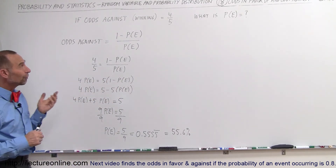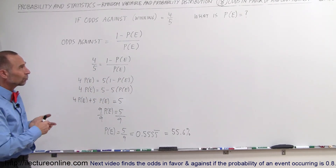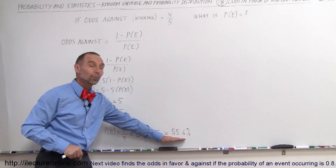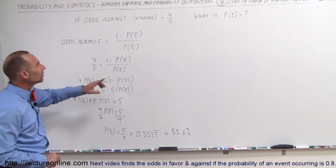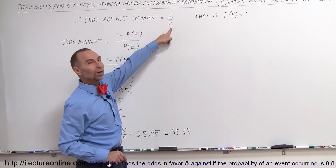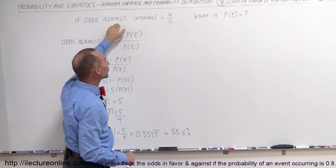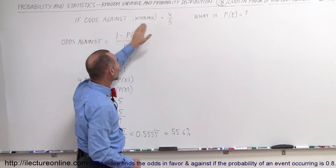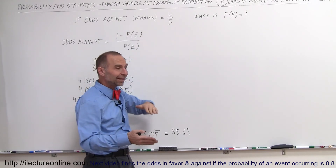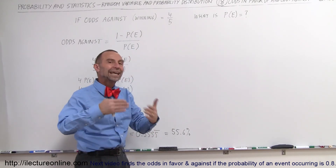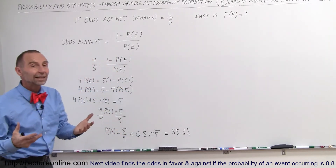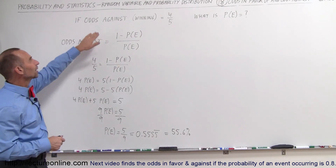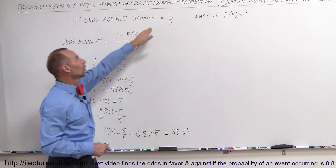So if the odds against winning are four-fifths, the probability that you will win — that the event will occur — is more than 50%. The key is: if the odds against number is less than 1, it's less likely for the unfavorable outcome to occur. If it's greater than 1, the unfavorable outcome is more likely. So if the odds against is less than 1 — four-fifths is less than 1 — that means it's less likely for the odds against you to occur, and therefore it's more likely for the other side, in favor of you, to occur. In other words, you're more likely to win if the odds against you are less than 1.